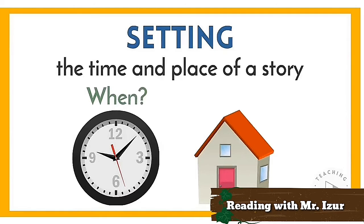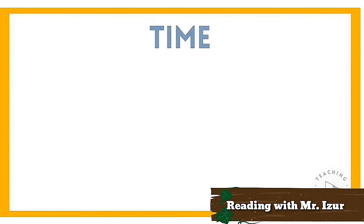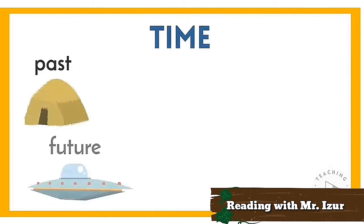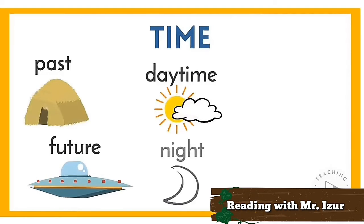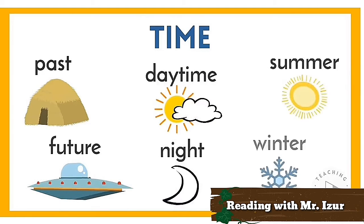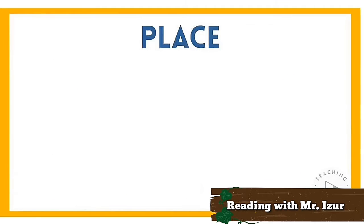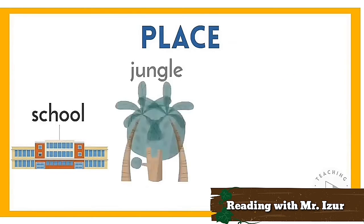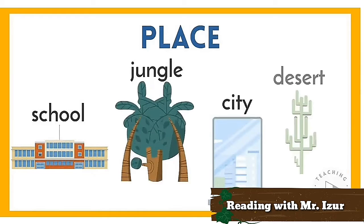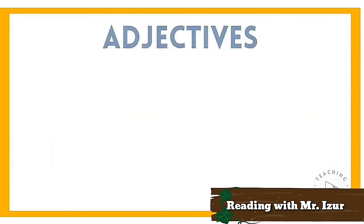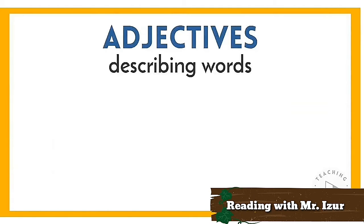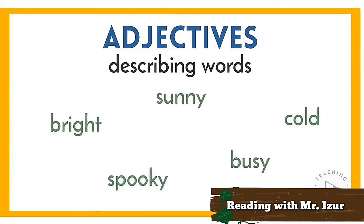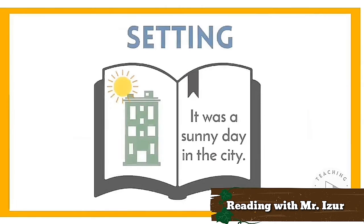Setting often answers the questions when and where. The time of a story may be in the past or in the future, in the daytime or at night, in the summer or winter. A story may take place in a school, in a jungle, in a big city, in the desert, or in a variety of other places. We can also use adjectives or describing words to tell about the setting, like if it's sunny, cold, bright, busy, or spooky.